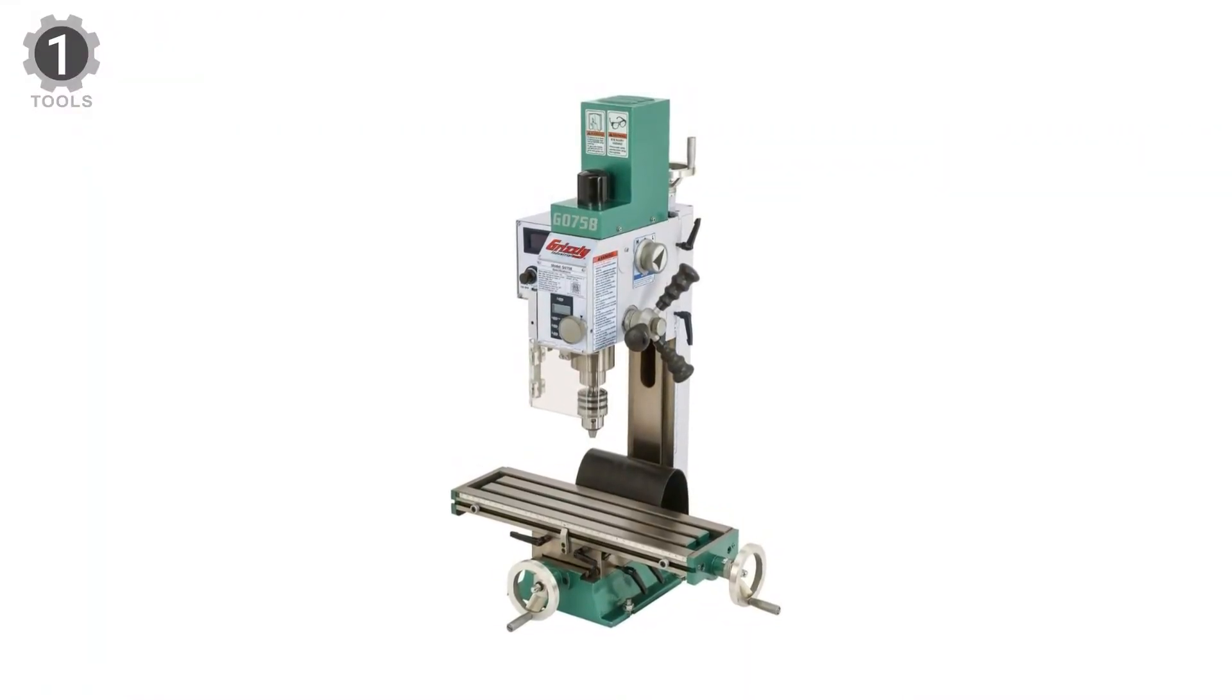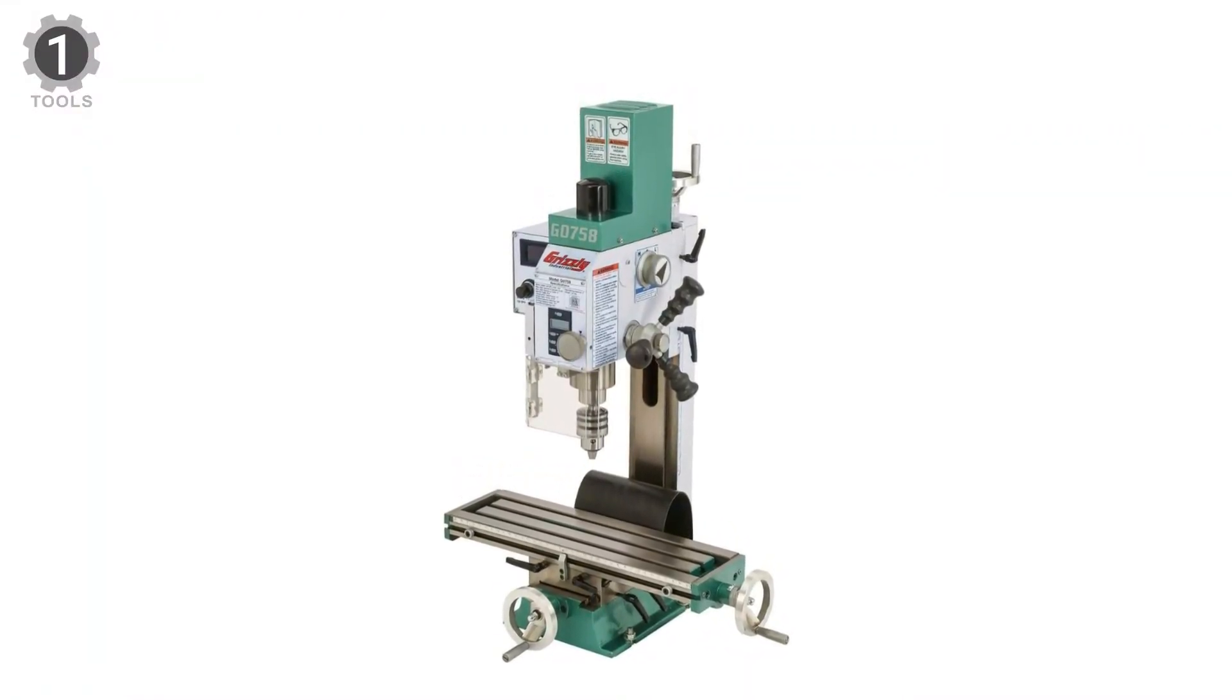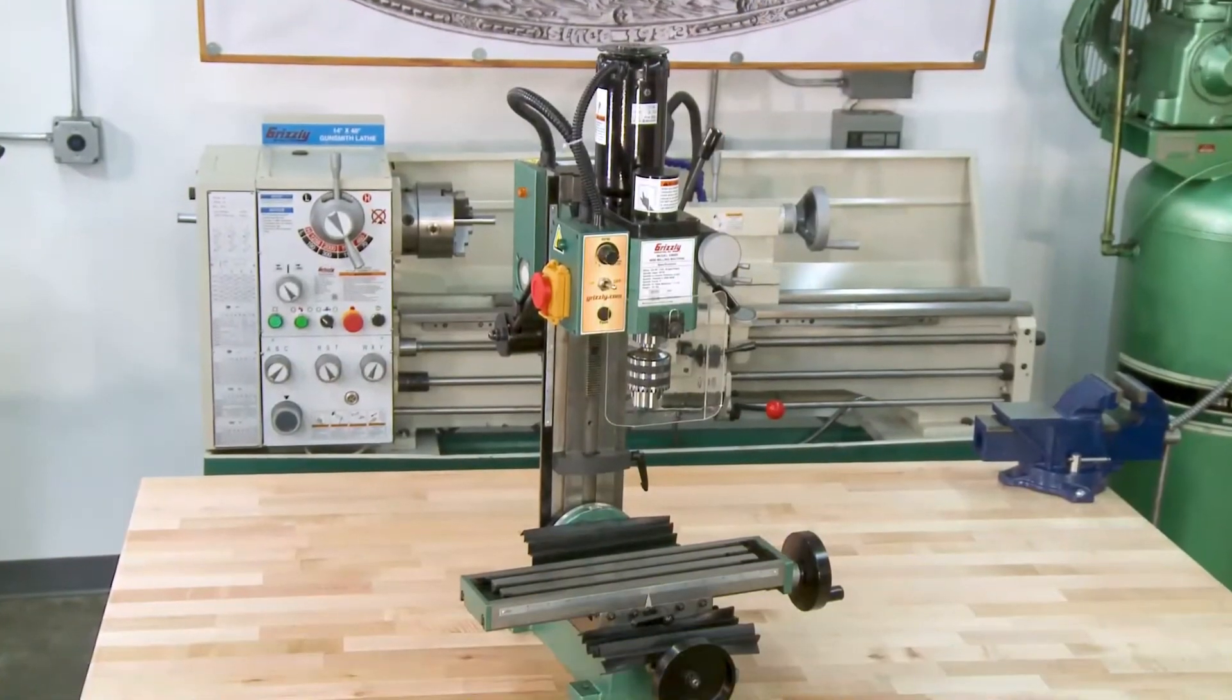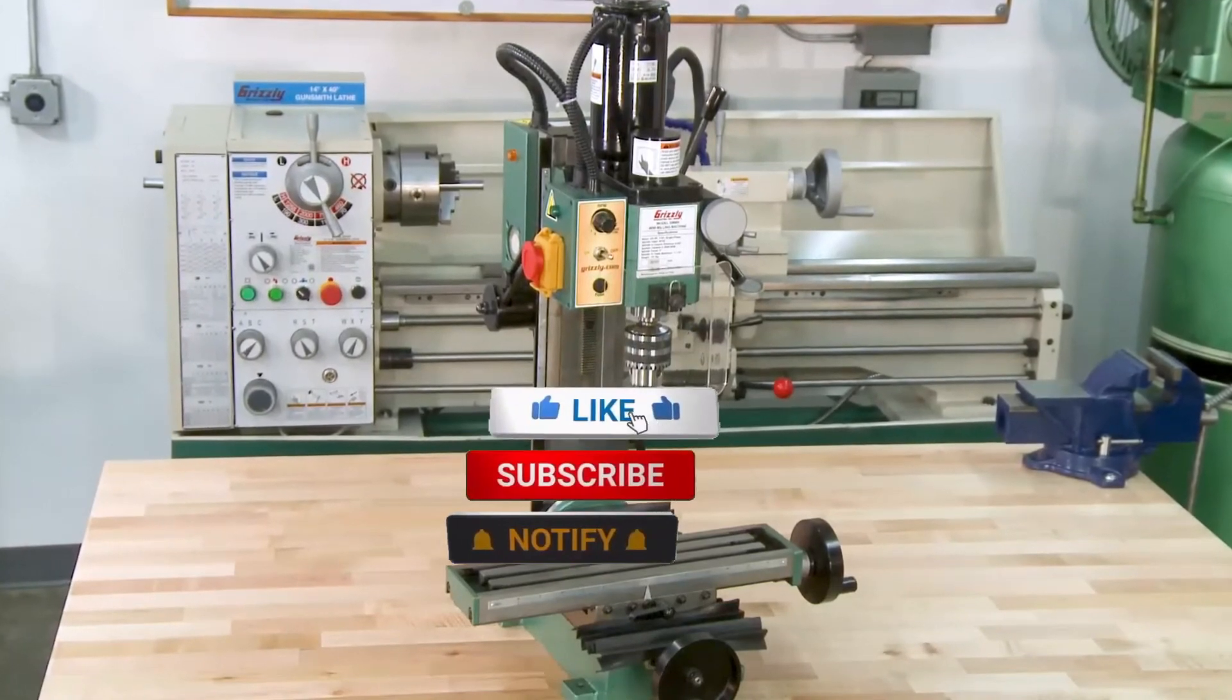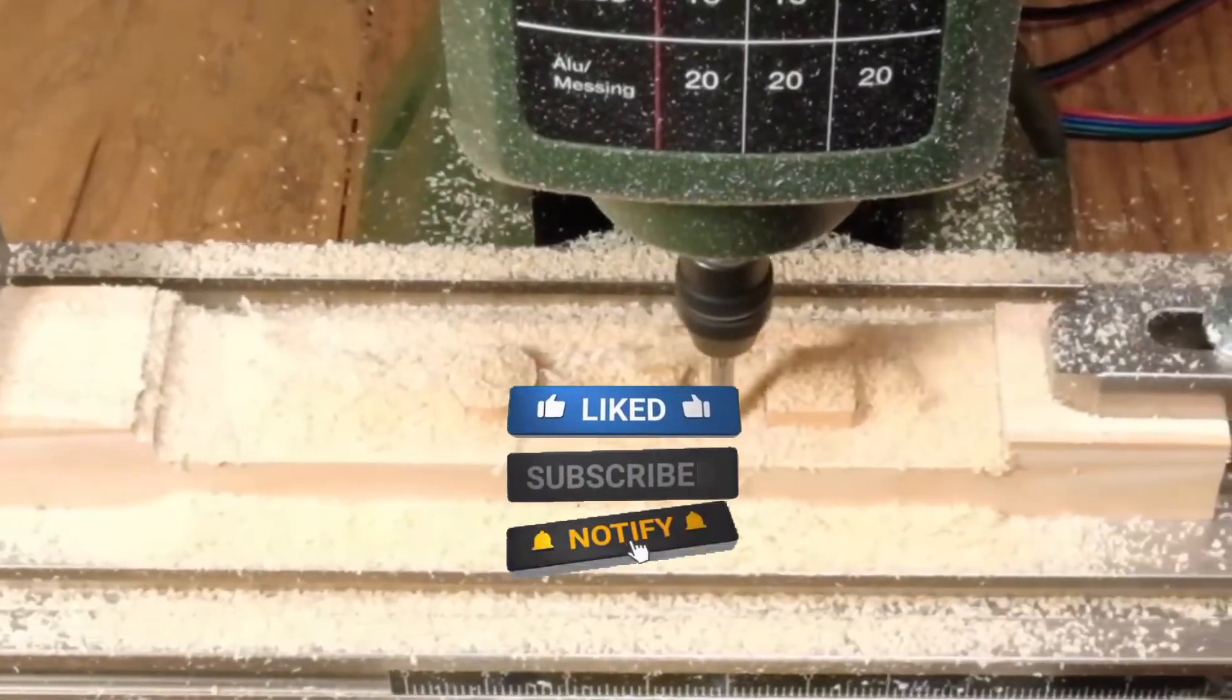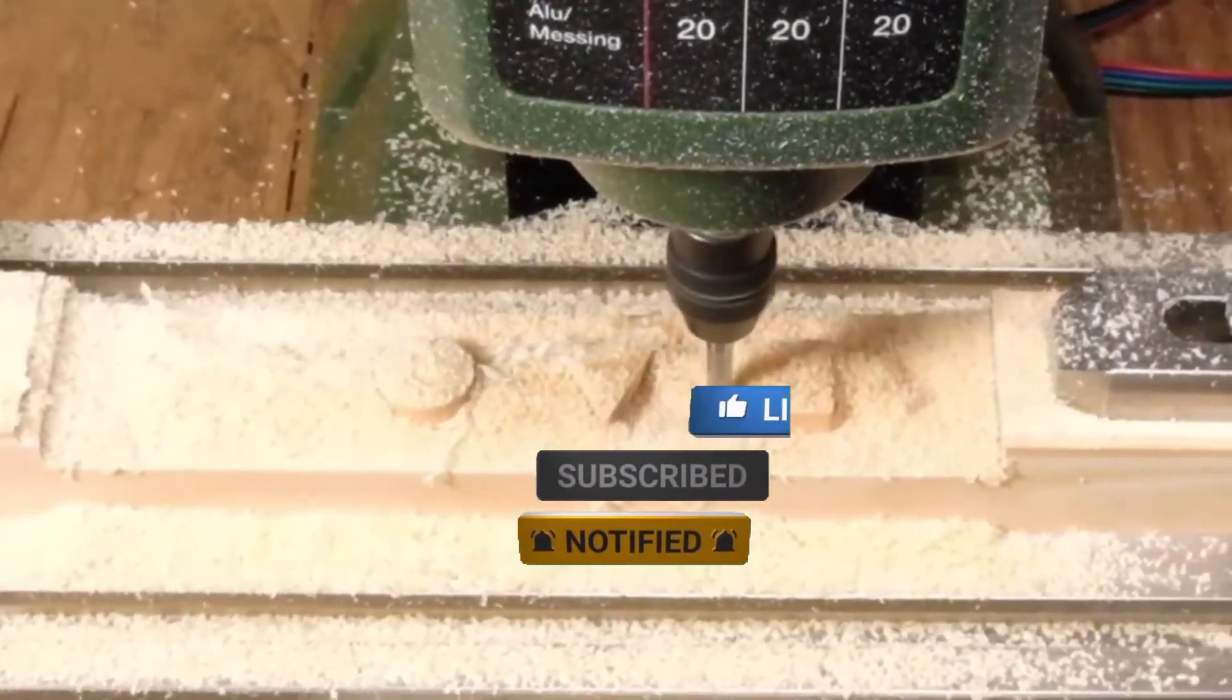However, the Grizzly G0758 is a good option for you. Make sure to check the description box for all the links regarding the mentioned mini milling machines. Don't forget to hit the subscribe button. We will be back with more videos soon.